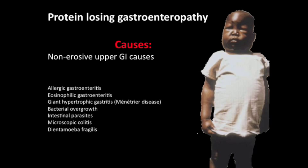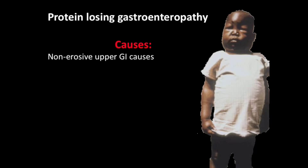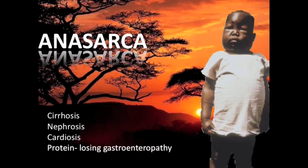So finally, just to repeat: there are four causes of anasarca that you should know — cirrhosis, nephrosis, cardiosis, and protein-losing gastroenteropathy. I hope this was useful. Thank you very much, and best of luck in your studies.